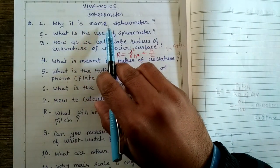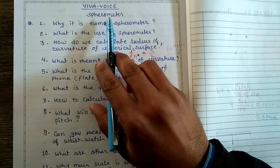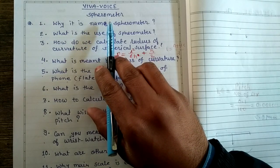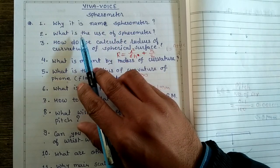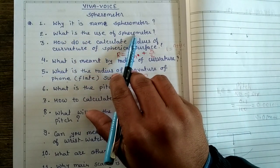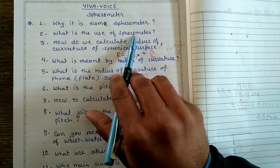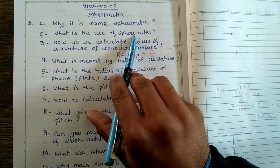Why is a spherometer named so? Since a spherometer is used to determine the radius of curvature of a spherical surface, it is named spherometer. What is the use of it? It is used for determination of radius of curvature of spherical surfaces.